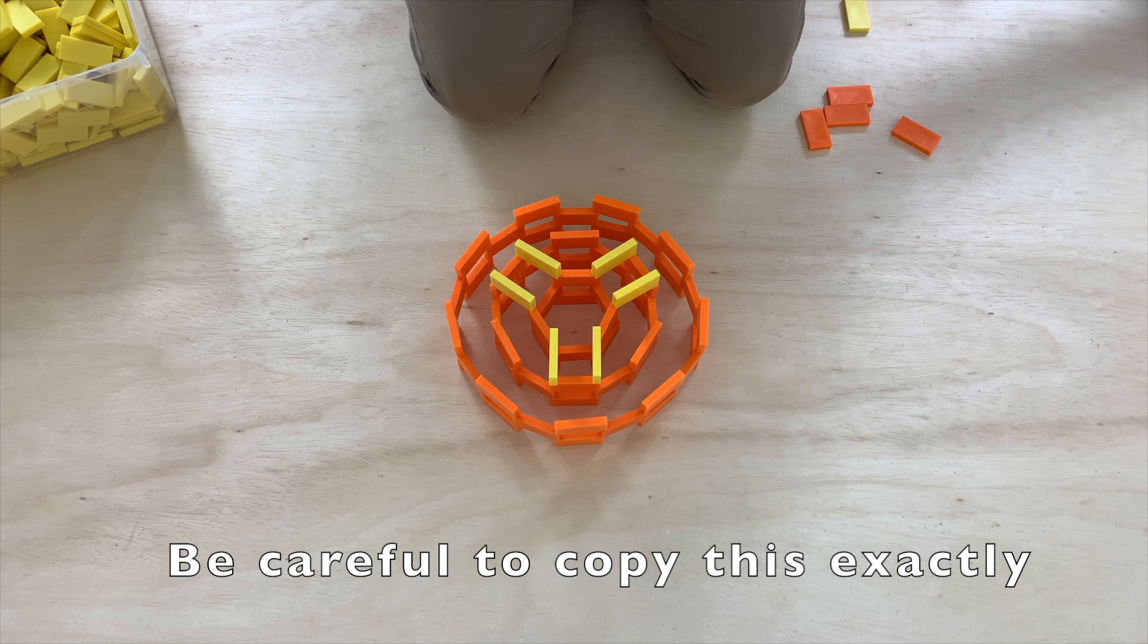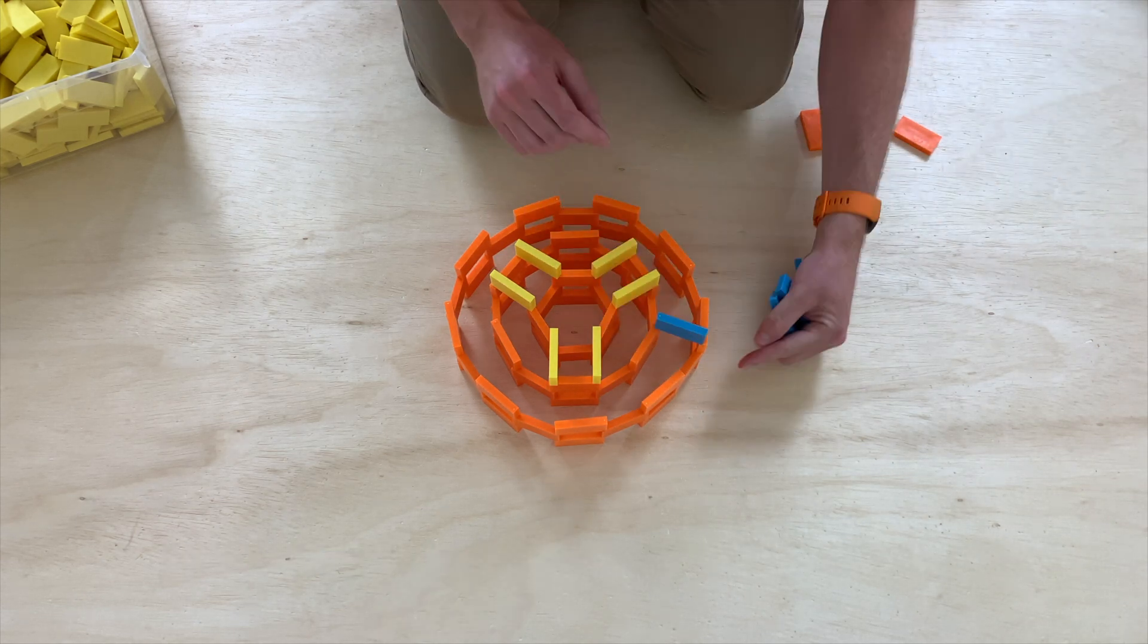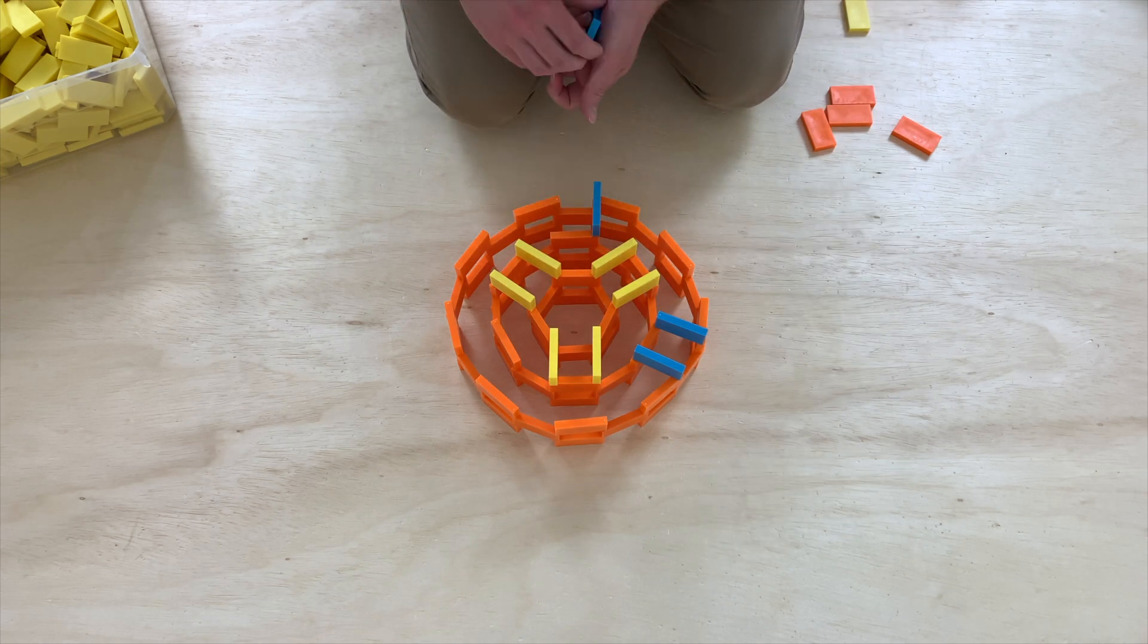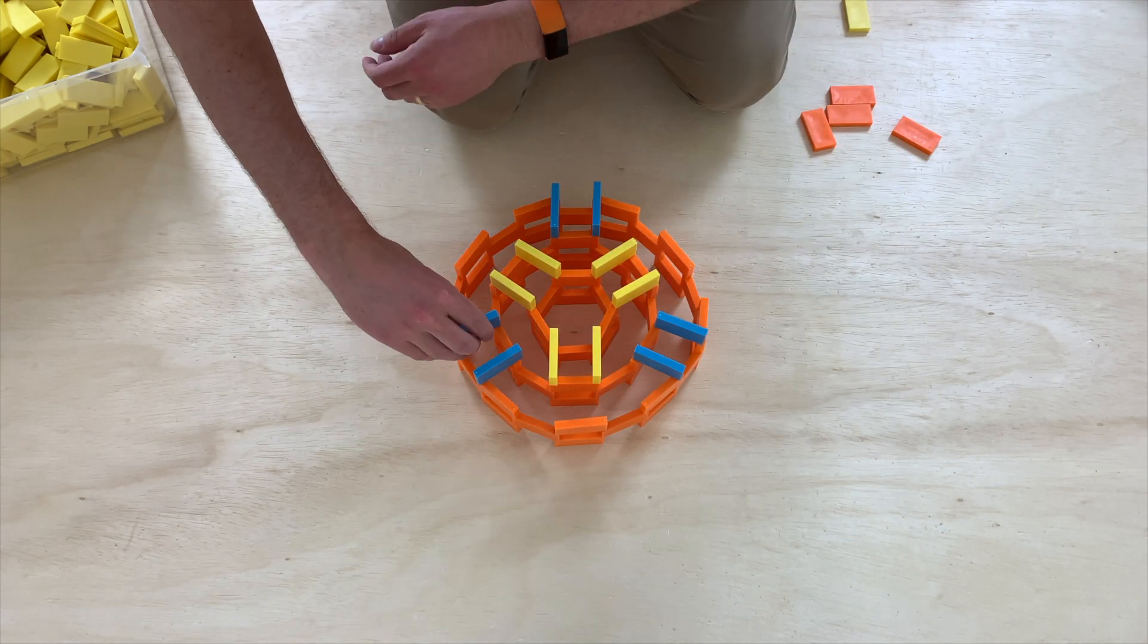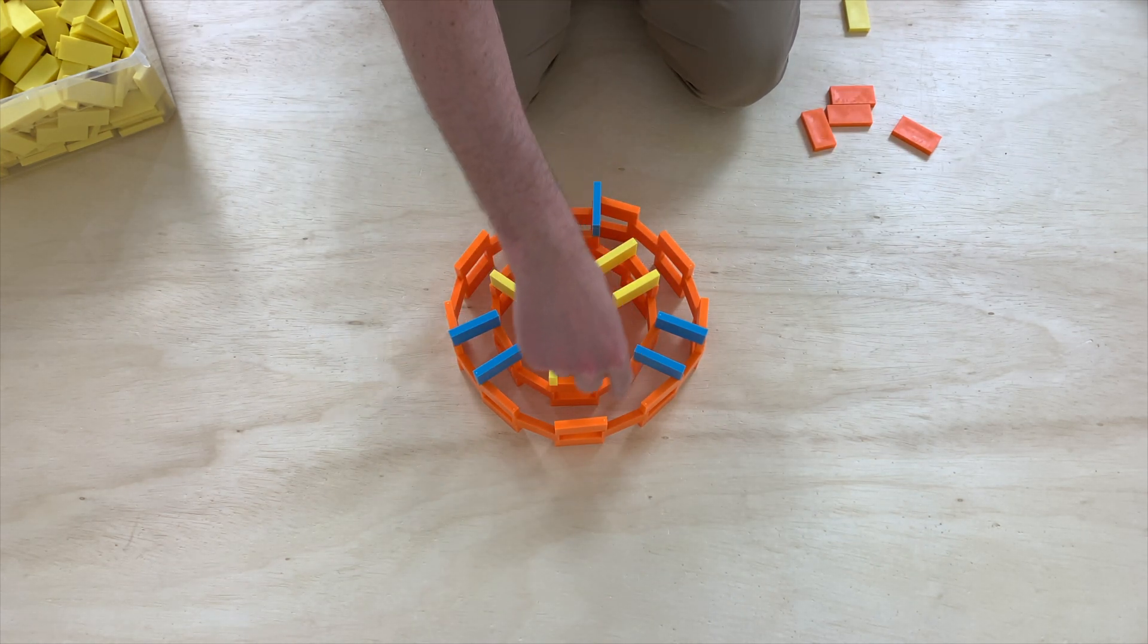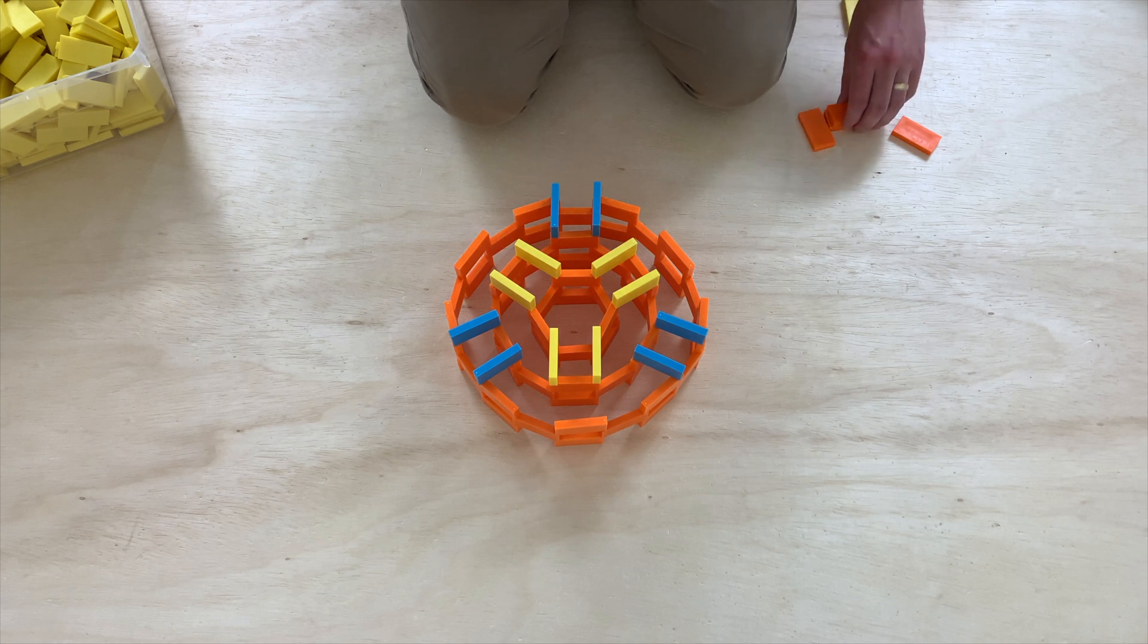Now I'm going to connect the middle circle to the outer circle. And now I'm just going to finish off the outer circle with some orange dominoes.